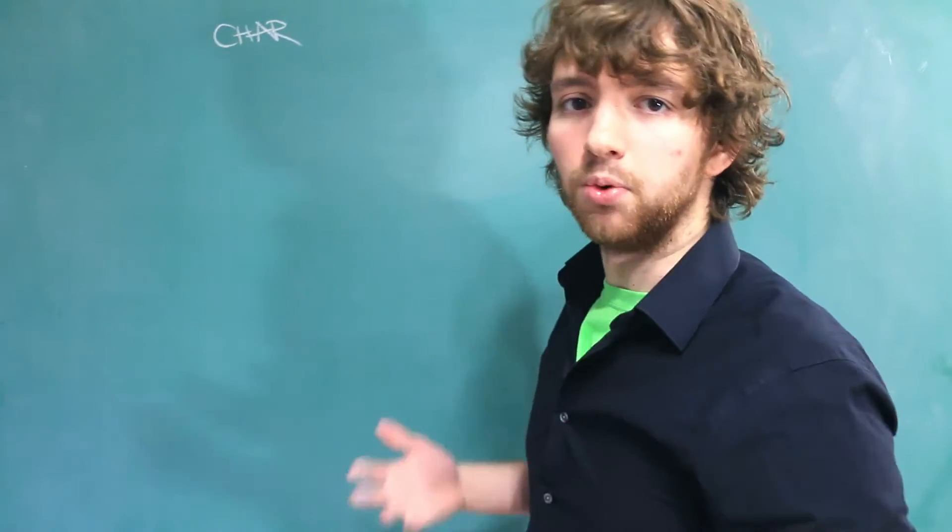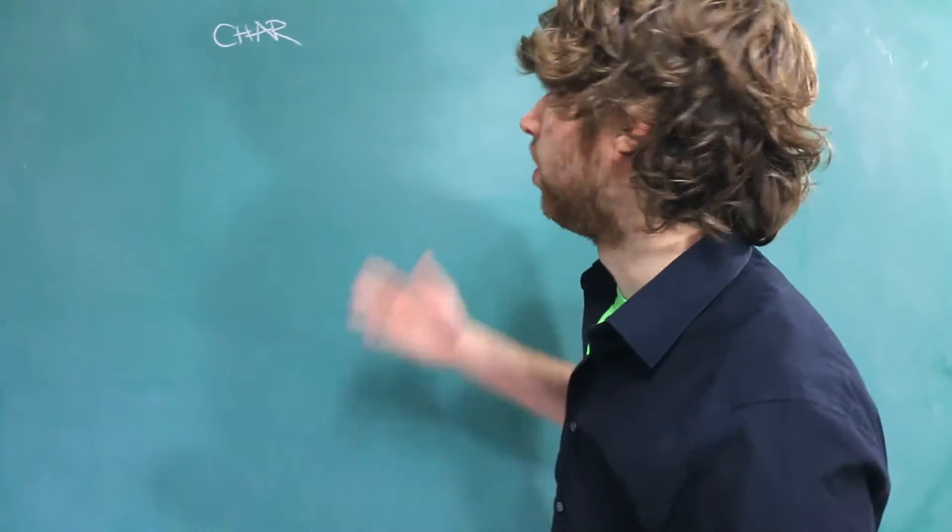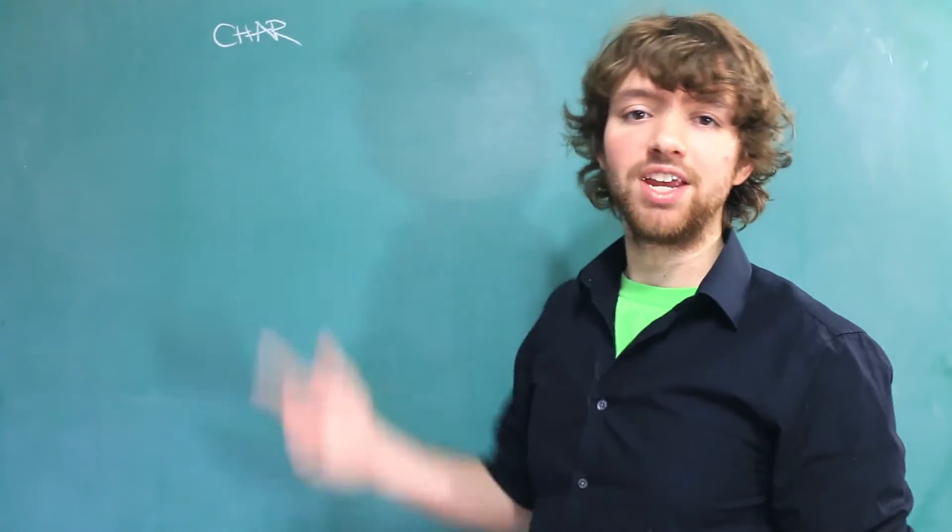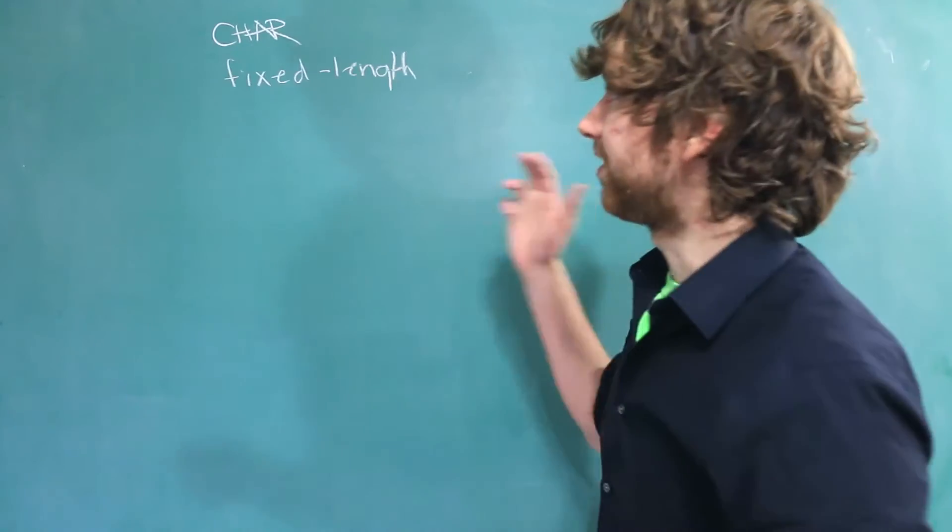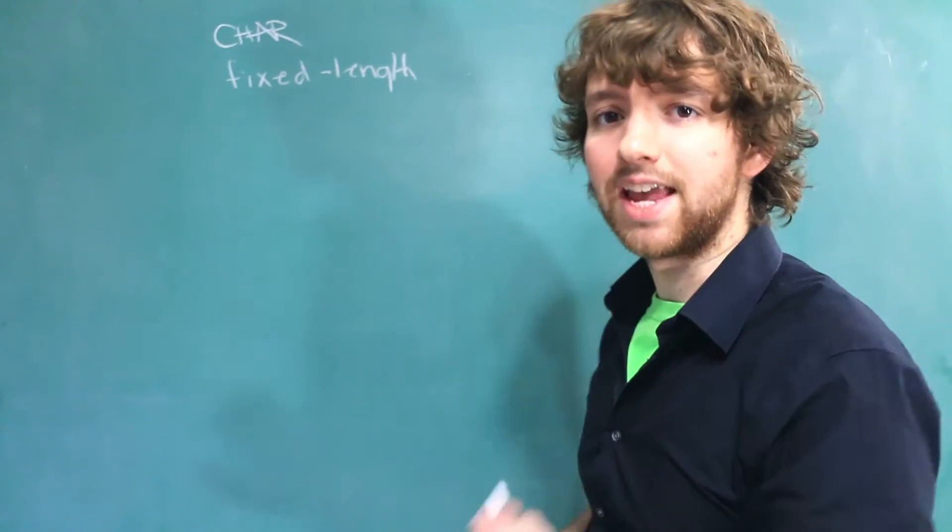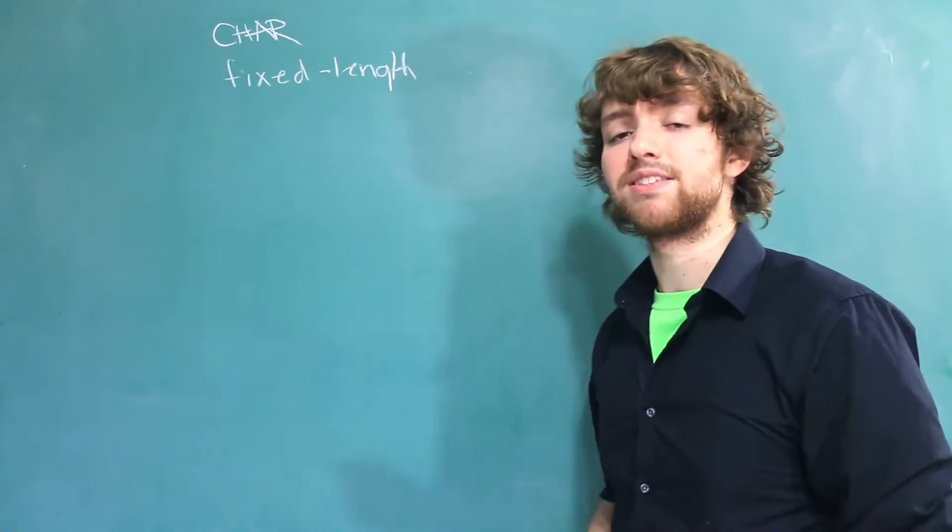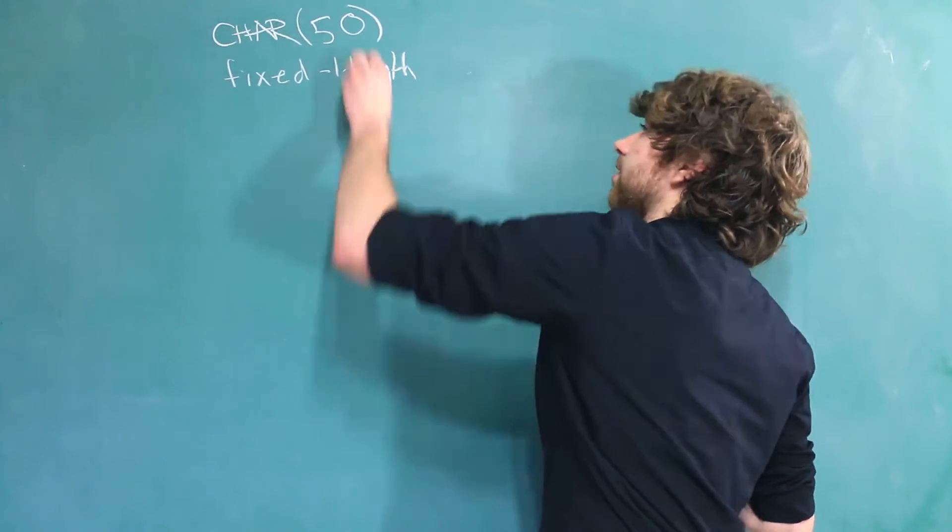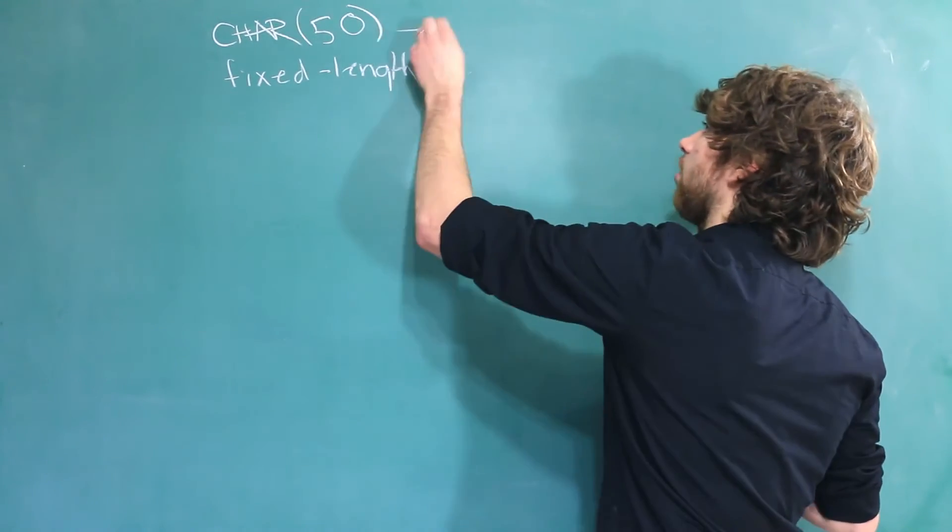So when we have a column in a table, we have to specify the data type. One of the available data types is char. And this is a fixed length data type. And what that means is that every single value for that column is of the same length. And we actually specify that length in parentheses when we declare that column. So something like this. This 50 here refers to characters.